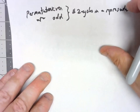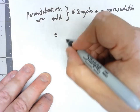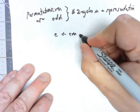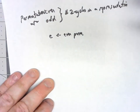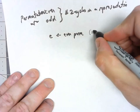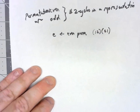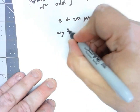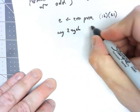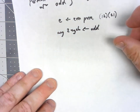A couple of important ones here. Obviously the identity is an even permutation — we could write it as zero two-cycles, though it might be easier to see as something like (1 2)(2 1), where those cancel each other out, giving us two two-cycles, so it's definitely even. Similarly, anything that is just a single two-cycle is an odd permutation, since one is an odd number.